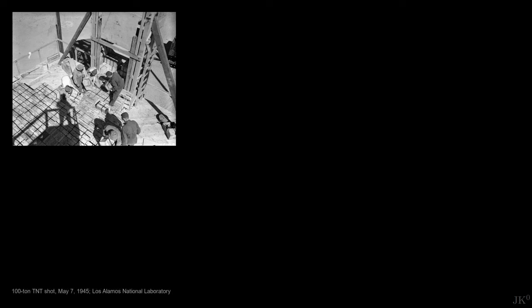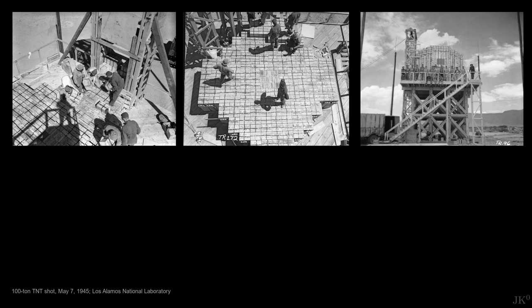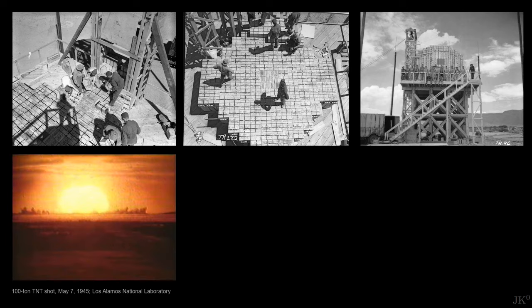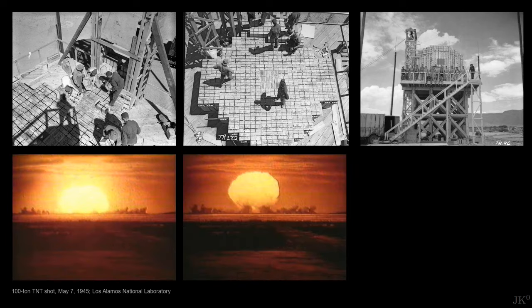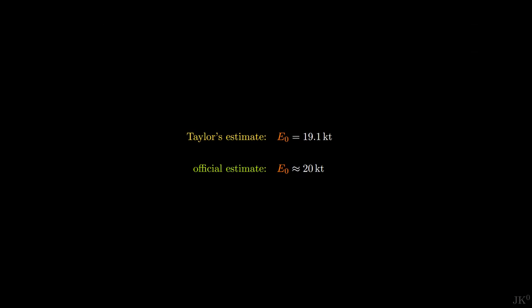Two months before the Trinity test, on May 7, 1945, the Manhattan Project scientists performed what they called the 100-ton TNT shot, in which 100 tons of TNT were detonated to calibrate and test many of the pressure, temperature, and radiation instruments developed for the real nuclear test in July. Taylor's estimate of the blast energy of the Trinity test is remarkably close to the official value, measuring many different ways to be close to 20 kilotons of TNT equivalent.